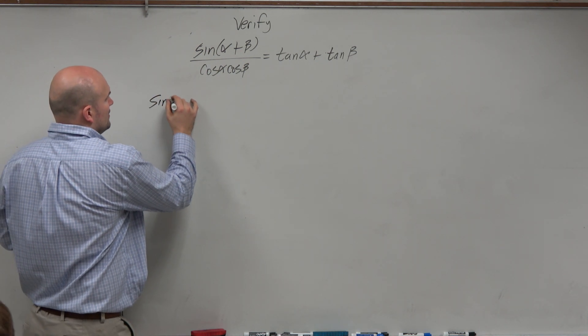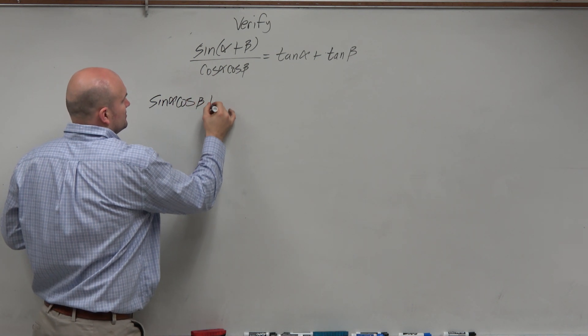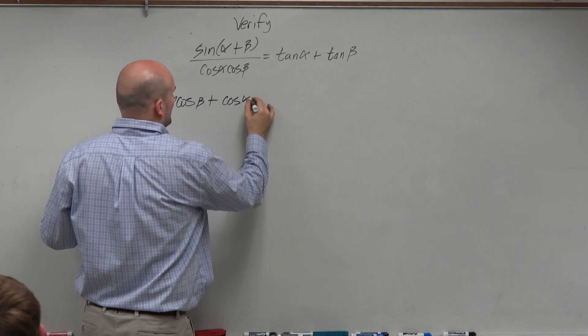So this would be the sine of alpha times the cosine of beta plus cosine of alpha times the sine of beta.